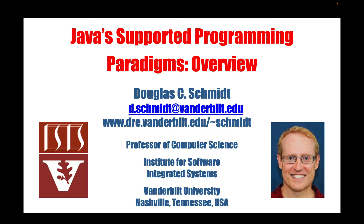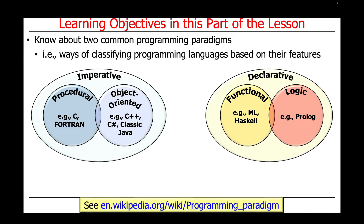Welcome to the first part of our lesson on Java's supported programming paradigms. In this part of the lesson, we have an overview of two common programming paradigms: the imperative and declarative paradigms. A programming paradigm is essentially a way of classifying programming languages based on their features.